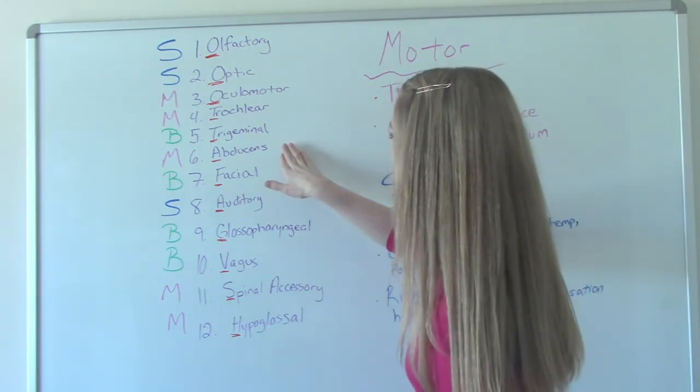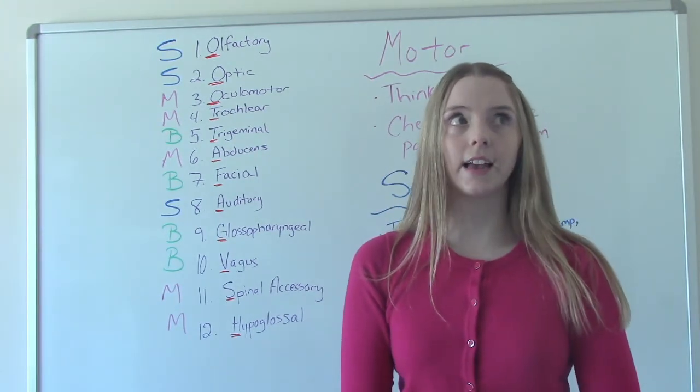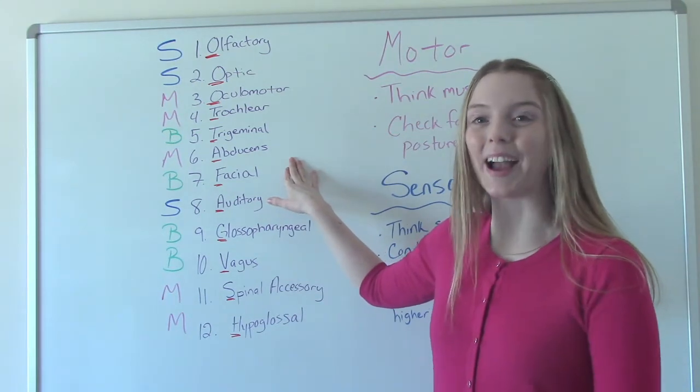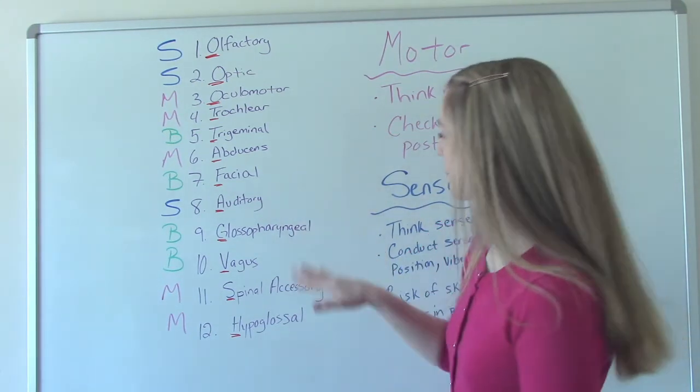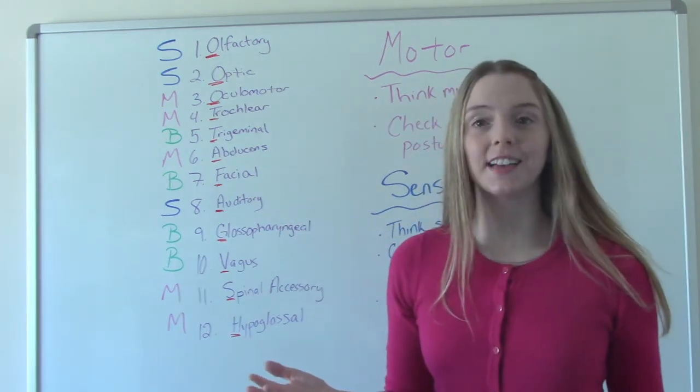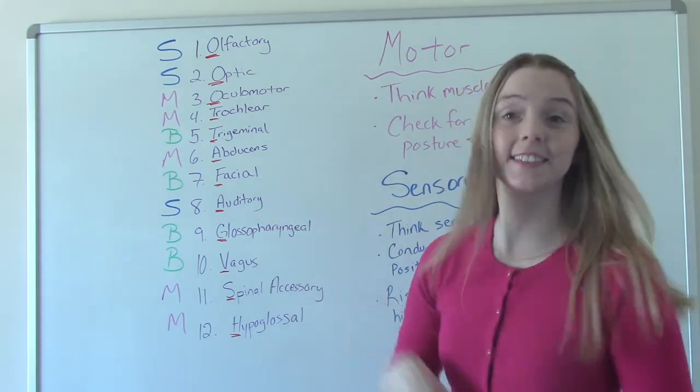Six is our abducens. So motor, again, the muscles in the eye looking laterally side to side. Number seven is another one that's both. This is like our smiling and puffing out our cheeks, right? Number eight is auditory. One of our five senses. Can they hear you? Yes. Okay, good. Number eight is intact and it's sensory.